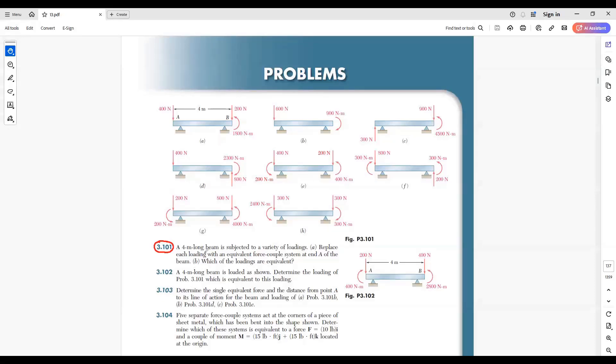A 4-meter-long bin is subjected to a variety of loading. Replace each loading with an equivalent force-couple system at end A of the bin. Solution.